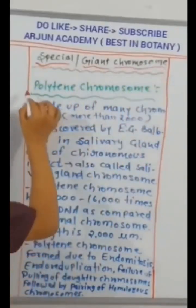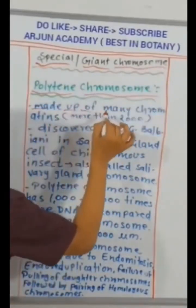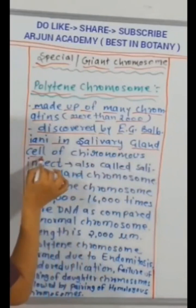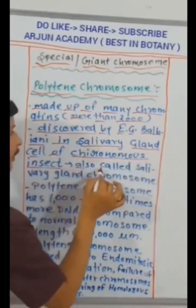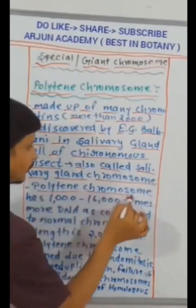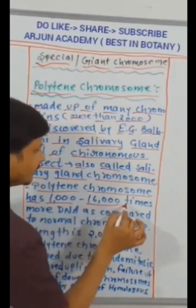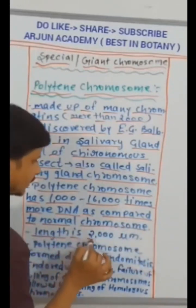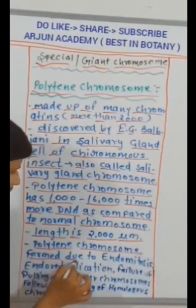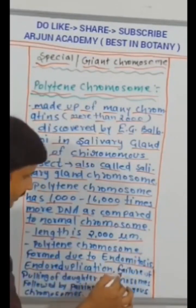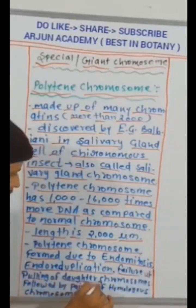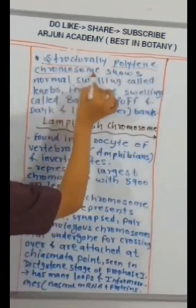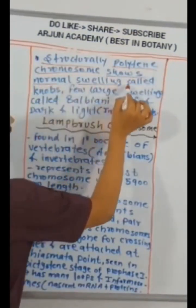Special giant chromosome. Polytene chromosome. Made up of many chromatids. More than 2000. Discovered by E.G. Balbiani in salivary gland cell of Chironomus insect. Also called salivary gland chromosome. Polytene chromosome has 1000 to 16,000 times more DNA as compared to normal chromosome. Length is 2000 micrometer. Polytene chromosome formed due to endomitosis, endoreduplication. Failure of pulling of daughter chromosomes followed by pairing of homologous chromosomes. Structurally polytene chromosome shows normal swelling called knobs. Few large swellings called Balbiani puffs and dark and light interbands.